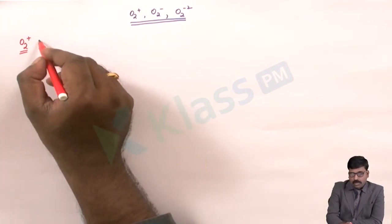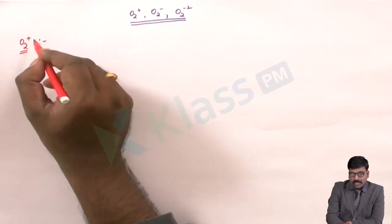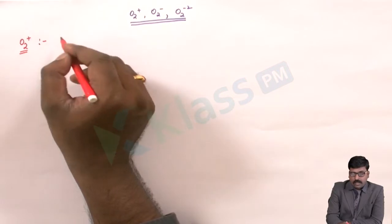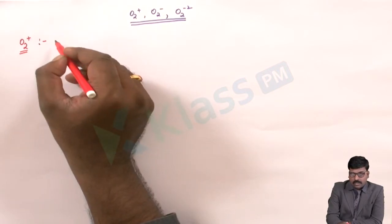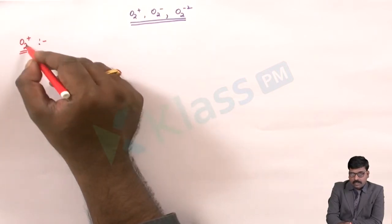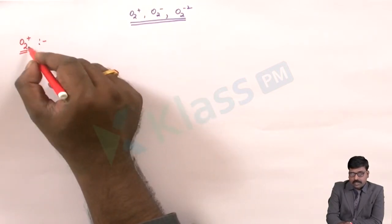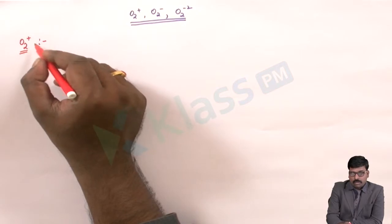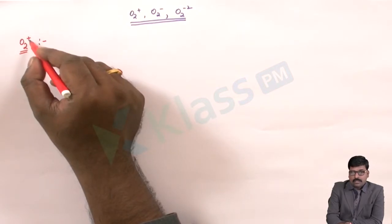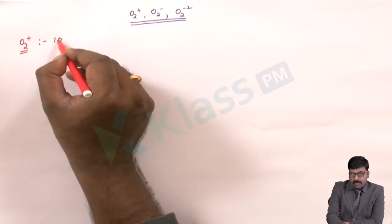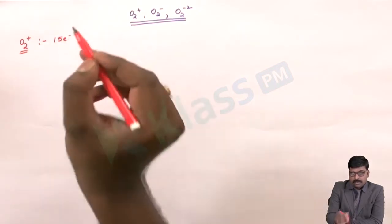For the O2 plus ion: O2 has 16 electrons, and removing one electron gives O2 plus a total of 15 electrons.